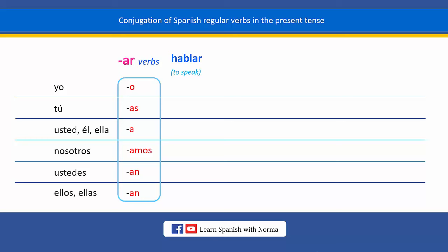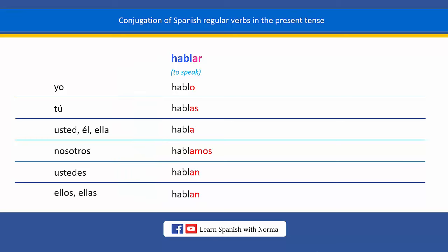For conjugating this Spanish verb, hablar, just remove the last two letters — the AR ending. And then, add the corresponding endings that match each subject pronoun. So, this is the conjugation of the Spanish verb hablar in the present tense.